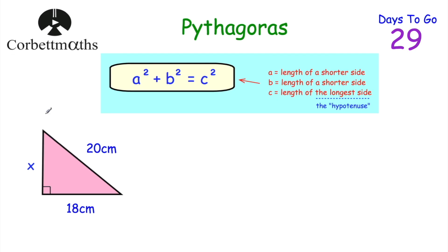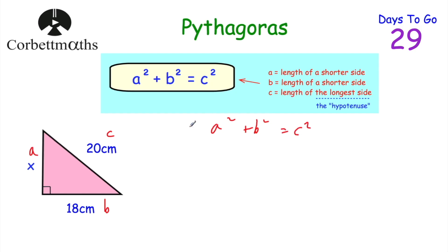Let's have a look at another question. This time we've got a right-angled triangle with side lengths 18 centimetres, X, and 20 centimetres. Feel free to pause and try it yourself. So I'm going to label the sides: C is the hypotenuse — opposite the right angle — equal to 20 cm, and A and B are the other two sides. Writing down Pythagoras's theorem: A squared plus B squared equals C squared, so X squared plus 18 squared equals 20 squared. This is a calculator question.